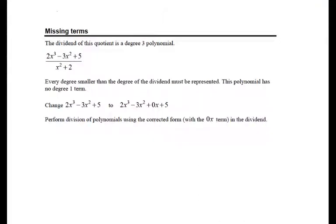This one being a polynomial with a missing term. What I mean by a missing term is that if we look at the dividend here, we start with a degree 3 term. The next term has degree 2. There is no degree 1 term.